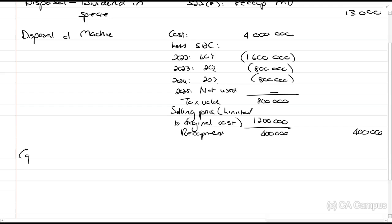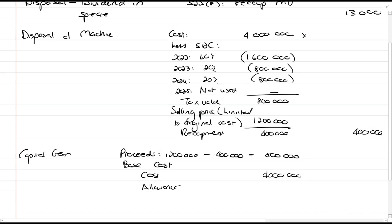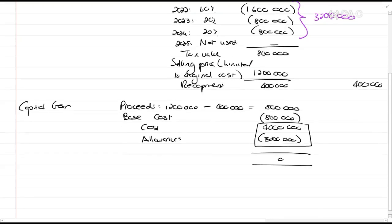Then, we have our capital gain. Proceeds, which is the selling price, minus the recoupment, 400,000, gives us 800,000. Our base cost is the cost of 4 million, less our allowances. The allowances is the sum of these amounts here, which is 3.2 million. So, that's 800,000. And we have no capital gain. Which makes sense because we didn't dispose it for more than its original cost of 4 million.